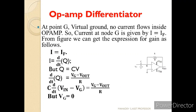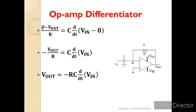Let us see the derivation of the differentiator. Using the virtual ground concept: I equals IF. I is DQ by DT; IF is VG minus Vout divided by R; and Q equals CV. Substituting: C into D by DT of (VIN minus VG) equals VG minus Vout by R. Since VG equals 0: 0 minus Vout by R equals C into D by DT of VIN. Rearranging: minus Vout by R equals C into D(VIN) by DT. Therefore Vout equals minus RC times the differentiation of VIN with respect to time.